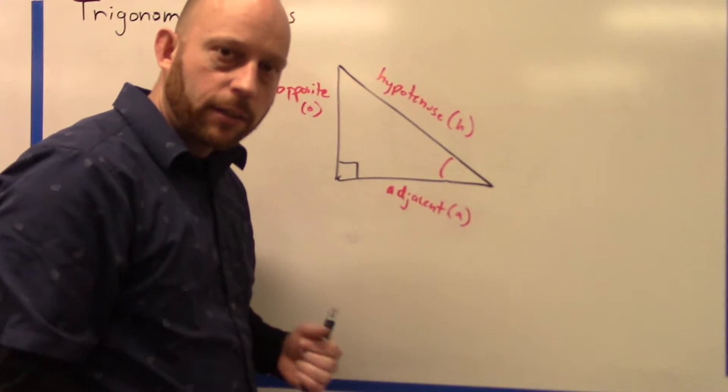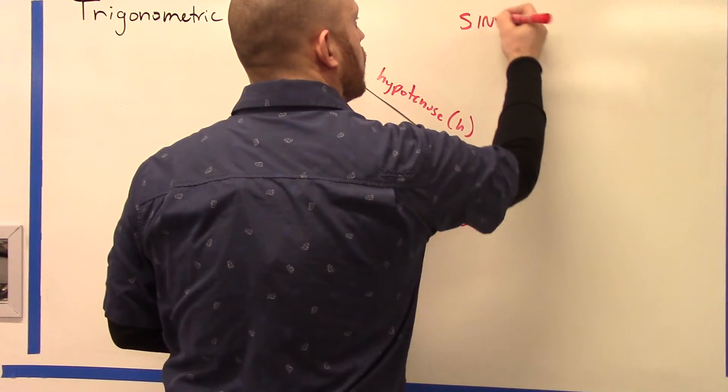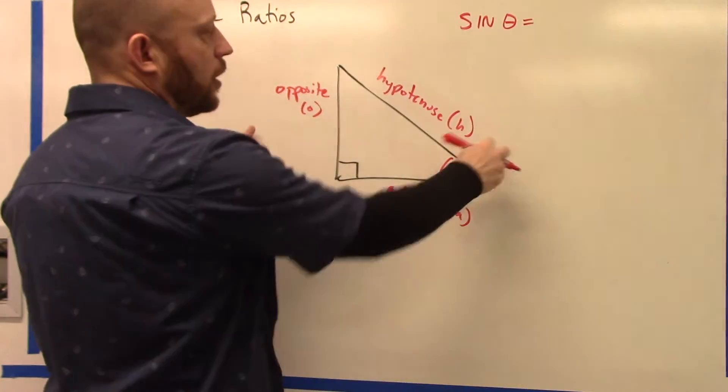Now we have three ratios: sine, cosine, and tangent. So sine of the angle is equal to the opposite over the hypotenuse.